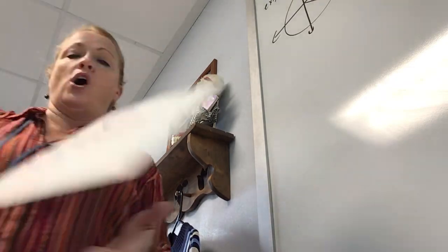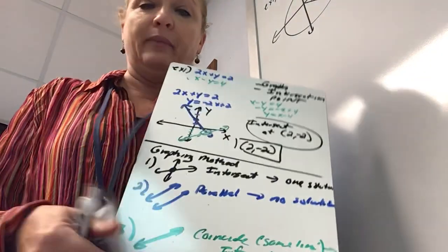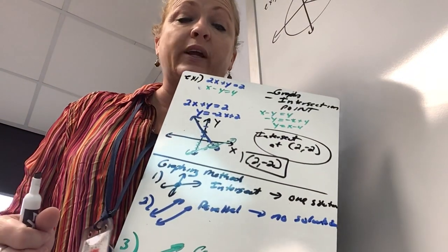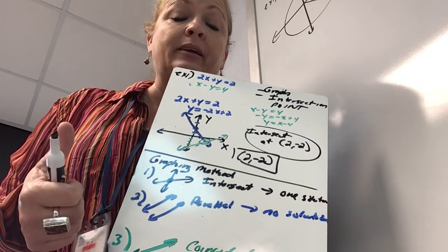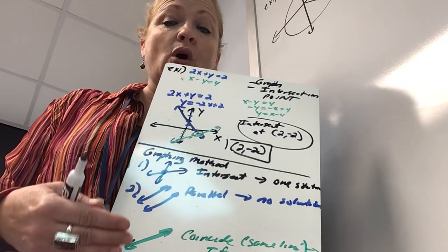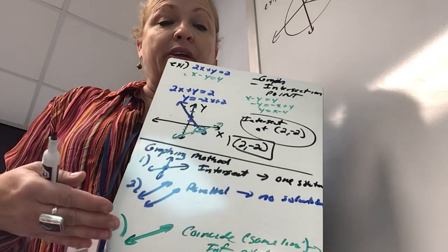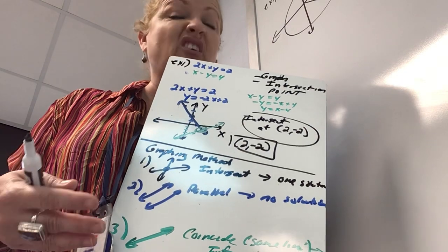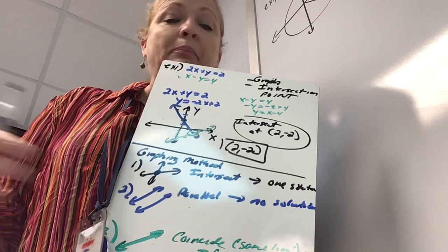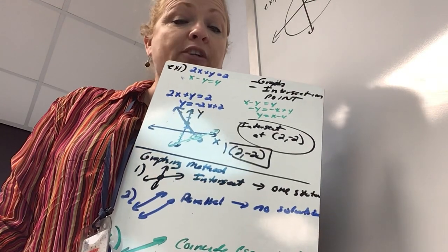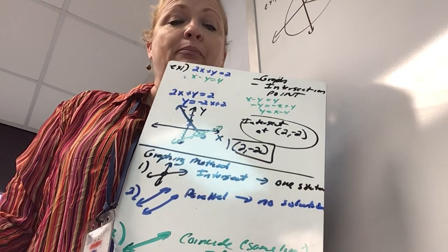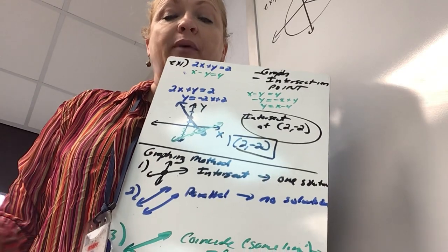There are three methods we'll use: solve by graphing, solve by substitution, and solve by elimination. Graphing works well when you don't have ugly fractions or big numbers. The pizza problem is not a good candidate for graphing — it has fractions and big numbers — so we'll come back to it when solving by elimination.